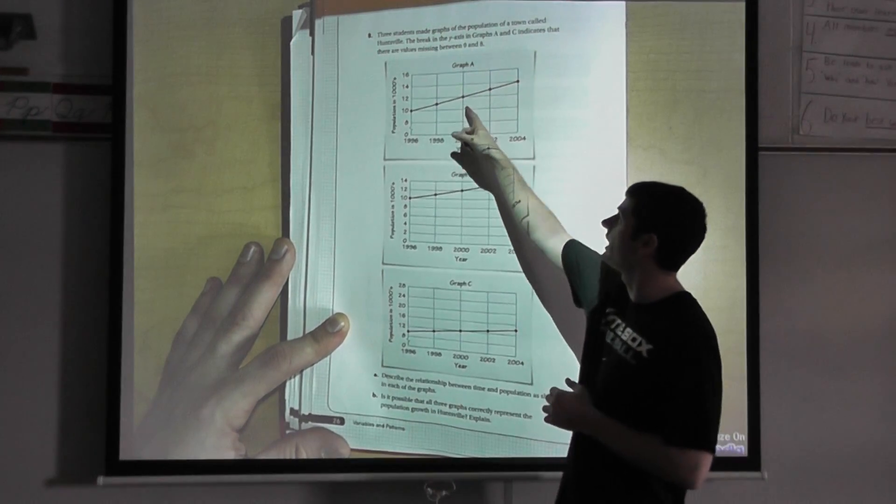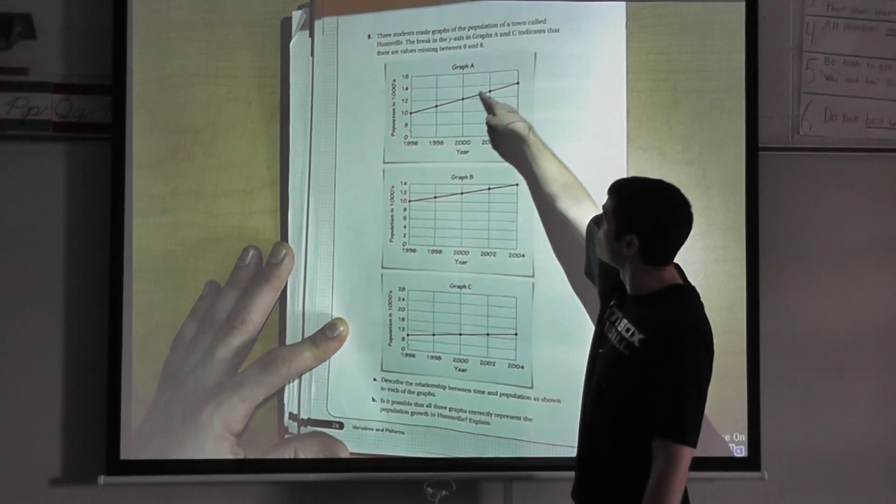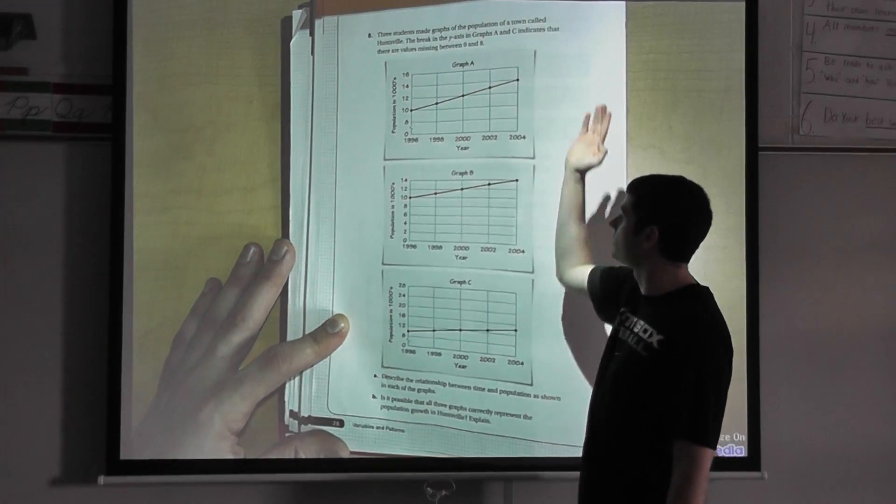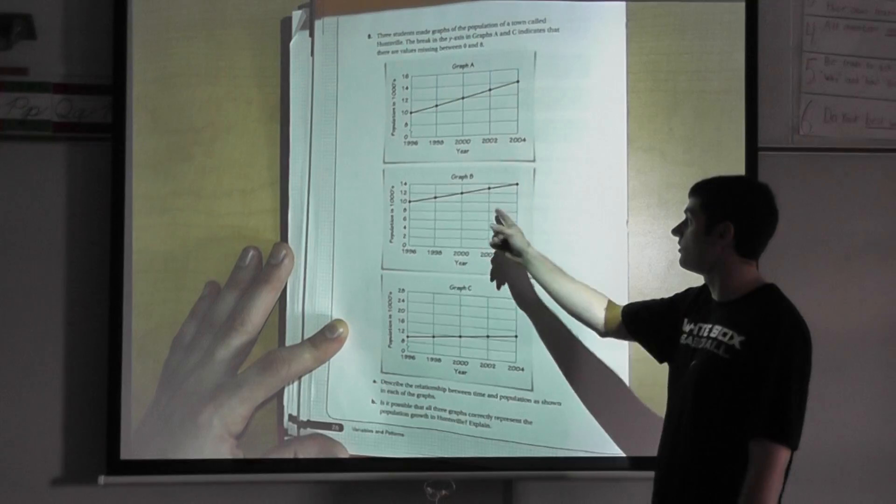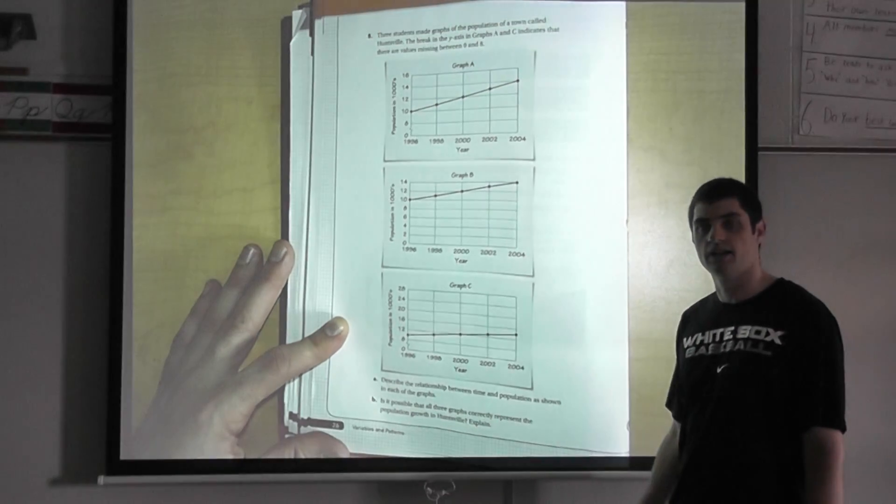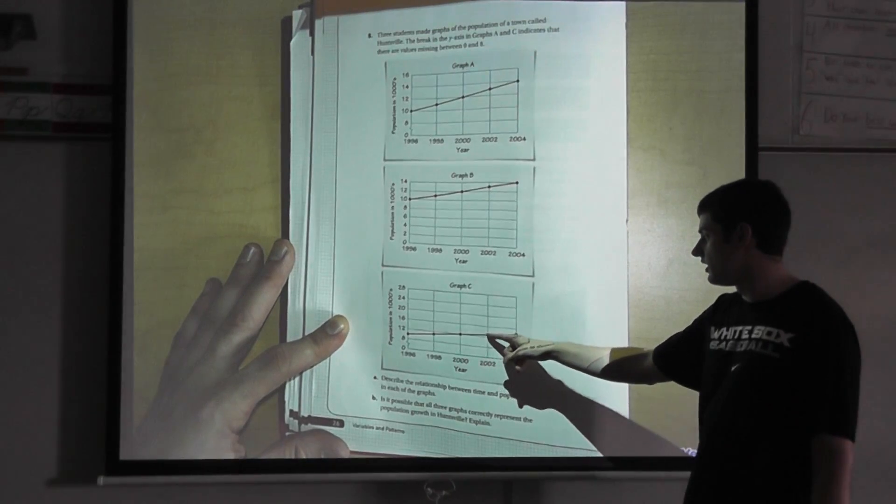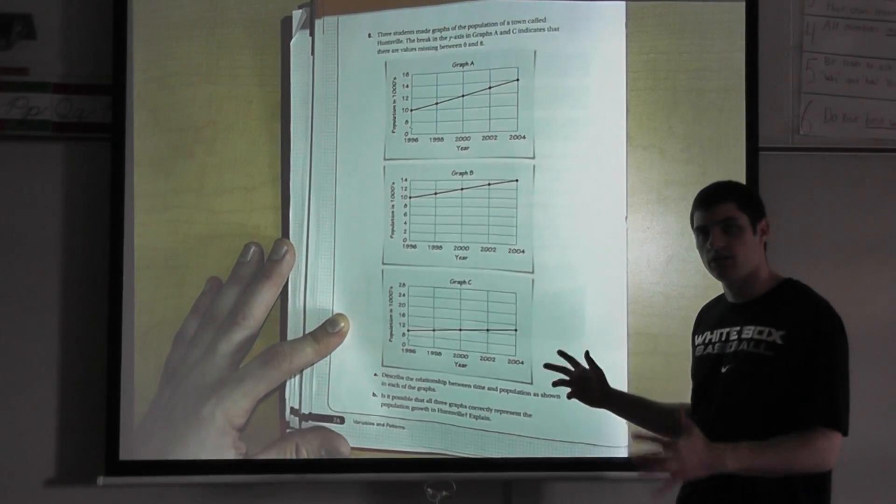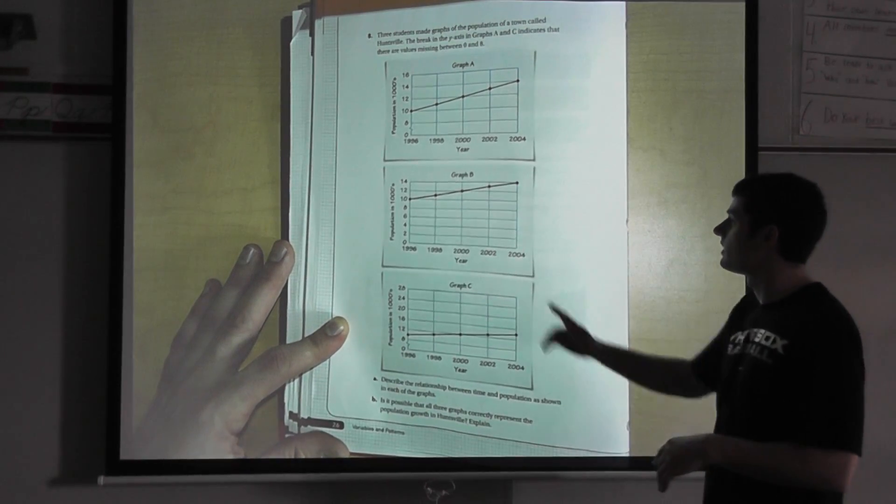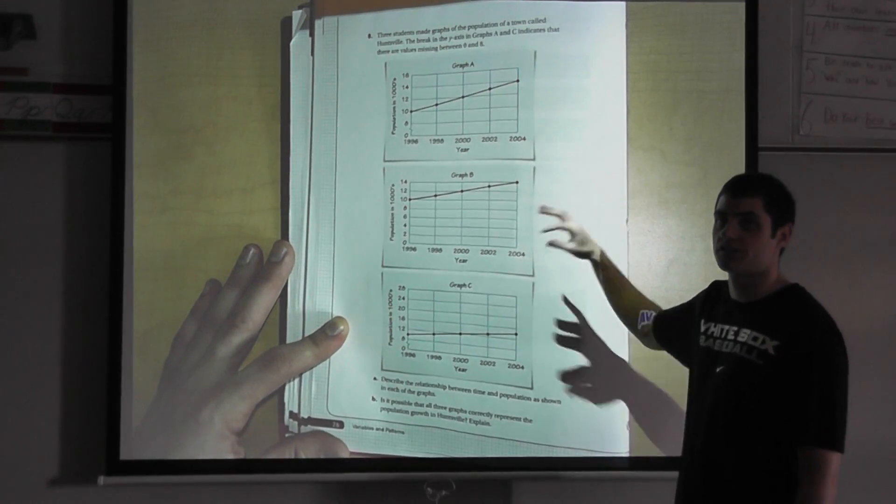If I look at graph A, look at the difference between graph A and graph B. This looks like the population is just taking off from here, and it's definitely increasing at a faster rate than B. And if I look at graph C down here, just look at your line. What does it look like happening to the population? Looks like it increases a little bit, but it's not really a big jump. So when I describe the relationship between all three of these graphs, graph B, I would say, shows the information in the best way.